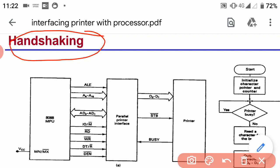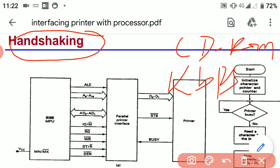For example, if a processor wants to receive data from a CD-ROM, a handshaking process will be done. Data transfer from a CD-ROM to a processor occurs at speeds in kbps, whereas data transfer from a memory device occurs at speeds in Mbps.